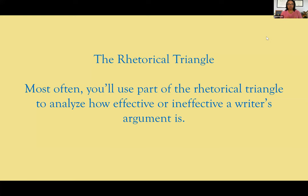You may remember from some of our previous videos the rhetorical triangle. Most often, you'll use part of the rhetorical triangle to analyze how effective or ineffective a writer's argument is. You may just use pathos, or you may just use logos, or you may do a combination of logos and ethos or pathos and logos. The rhetorical triangle gives you a framework to analyze what the writer's argument is and how they're making that point — whether they're using emotions with pathos, a logical argument with logos, or research and credibility with ethos.